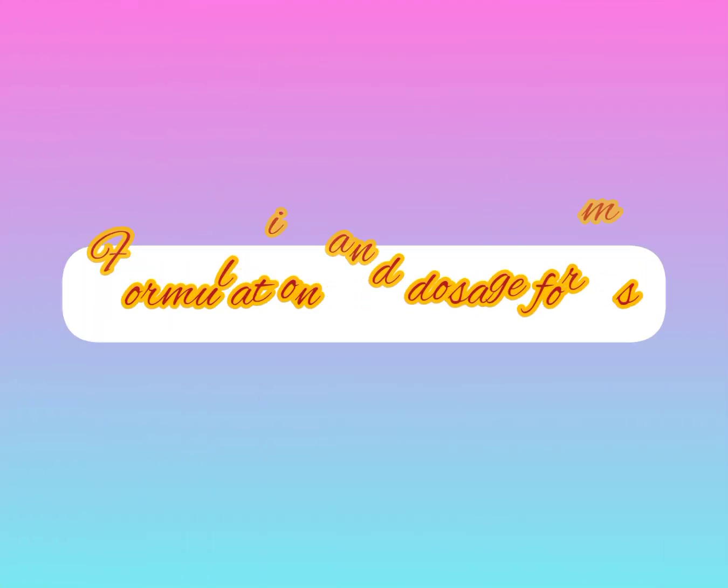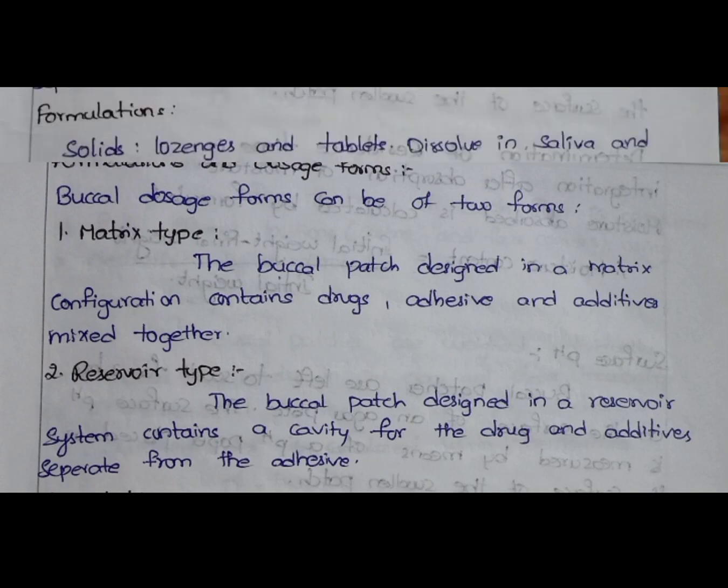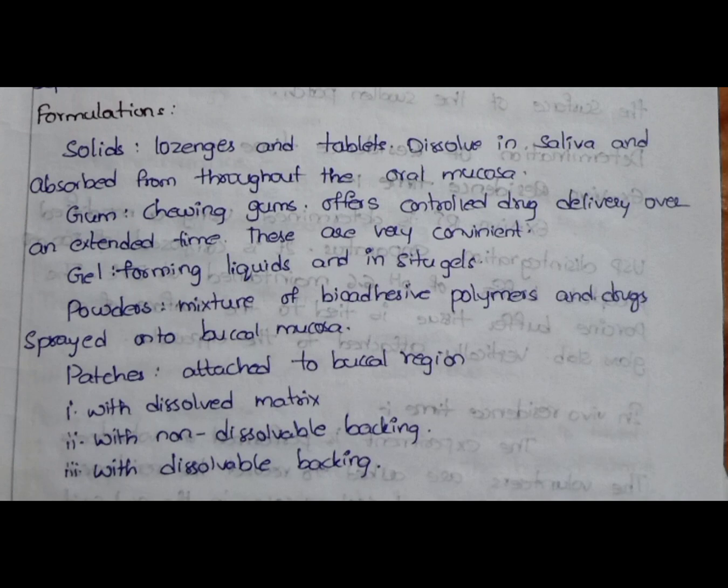Formulation and dosage forms: buccal drug delivery system has two types of dosage forms — one is the matrix type and the other one is the reservoir type. Formulation of buccal drug delivery system includes solids, gums, gels, powders, and patches.